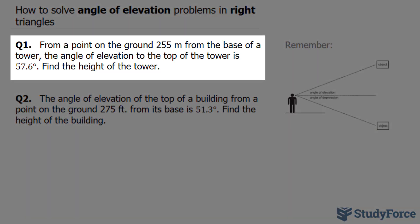Question 1 asks: from a point on the ground 255 meters from the base of a tower, the angle of elevation to the top of the tower is 57.6 degrees. Find the height of the tower.